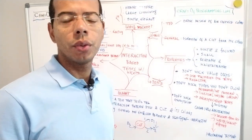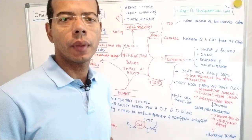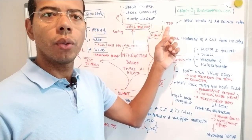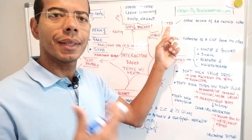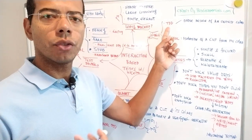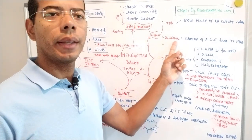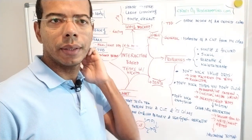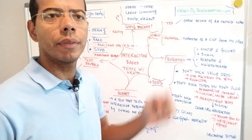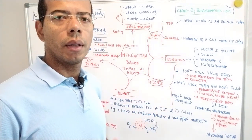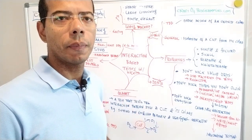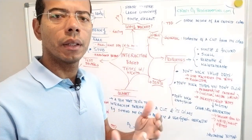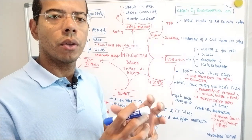Let's talk about when you should use the interaction-based testing style. There are two general categories: one is when you're doing a design style called TDD — test-driven design — and in a more general case, when you just want to use the mocking framework to isolate your component under test. Let's talk about the test-driven design style here.